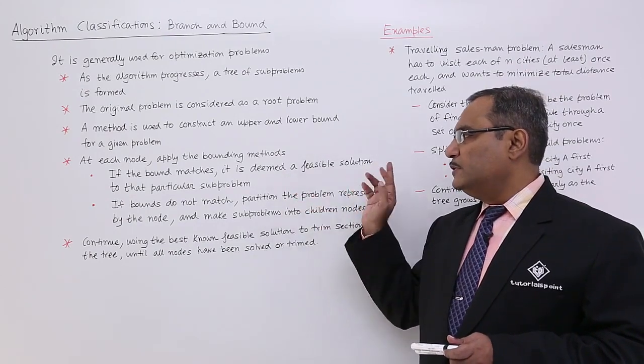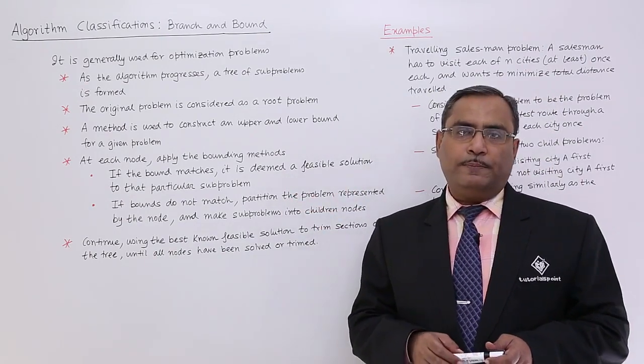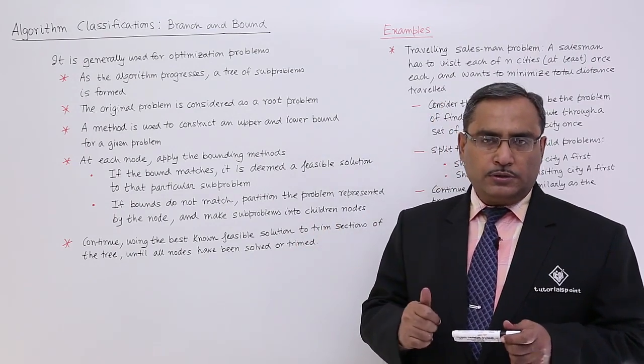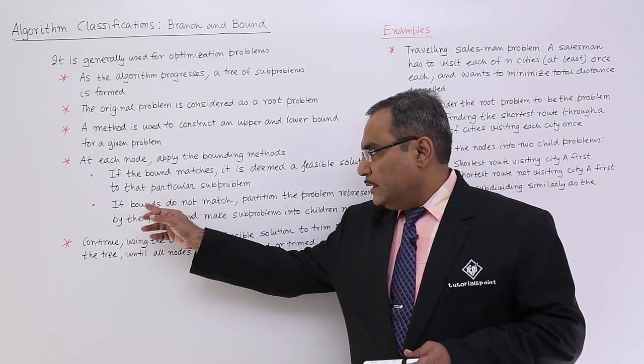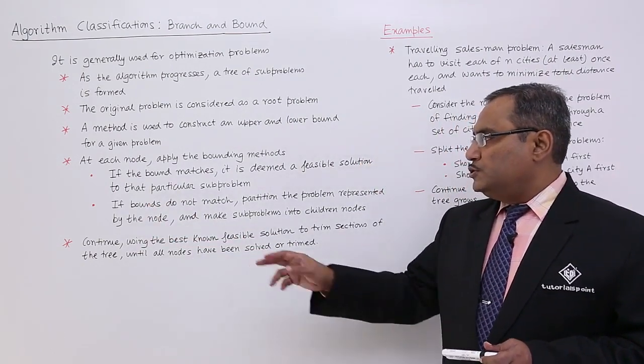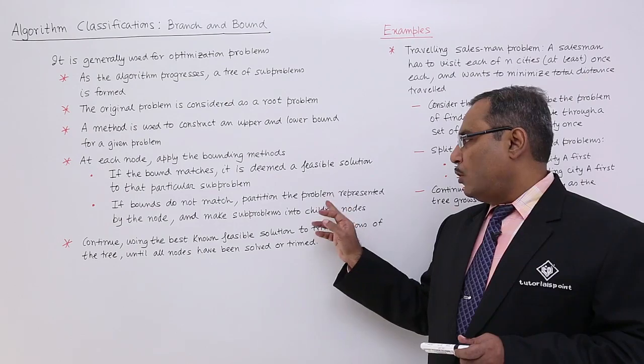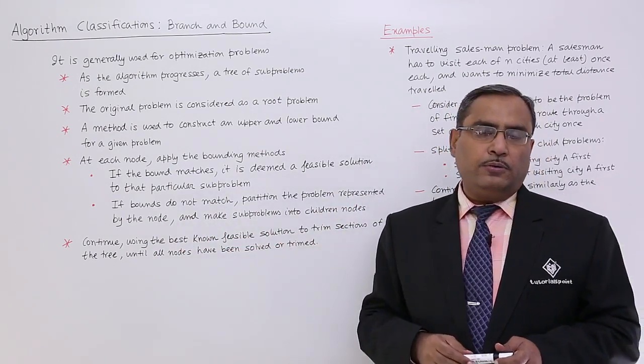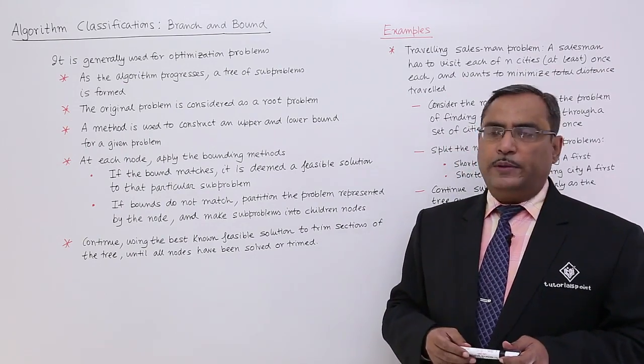If the bound matches, it deems a feasible solution to the particular sub-problem. If it matches with the bound, then it is a possible solution. If bounds do not match, partition the problem represented by the node and create sub-problems into children nodes. And in this way, the process will be continued.